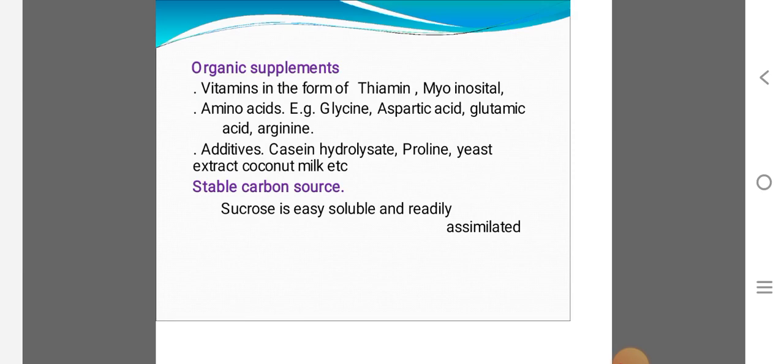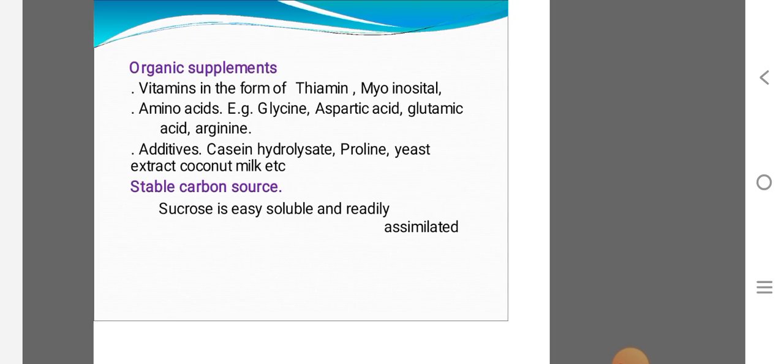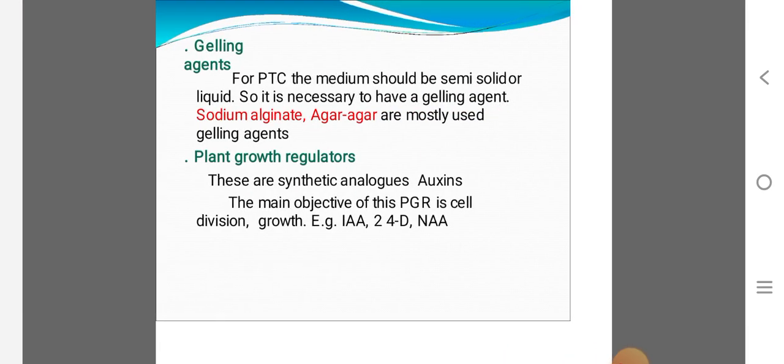These extracts are used to be easily soluble, readily assimilated carbon. Gelling agents, in plant tissue culture, to prepare semi-solid or liquid cultures, compulsory gelling is necessary. Gelling agents: sodium alginate, agar-agar. Gelling agents we use.